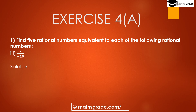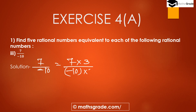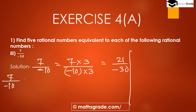Third part: 7 divided by minus 10. We have to find the 5 equivalent rational numbers of 7/(-10). First, multiplying by 3: 7×3 = 21 and (-10)×3 = -30, giving 21/(-30). Second, multiplying by 7: 7×7 = 49 and (-10)×7 = -70, giving 49/(-70).